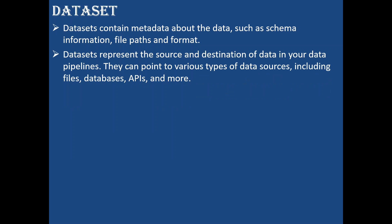Data sets represent the source and the destination of the data in your data pipeline. So datasets represent where your data is at the source side — from where it has to extract the data — and where it has to load the data at the target. The location of the source, location of the target, the schema of the source file, and in which format we need to load the data in the sink — all these things we represent inside the datasets in our pipeline.